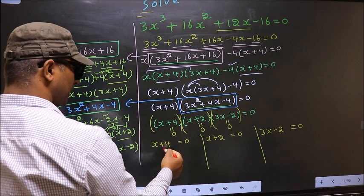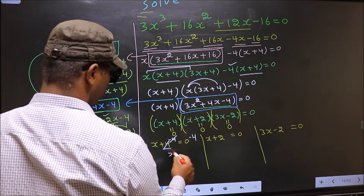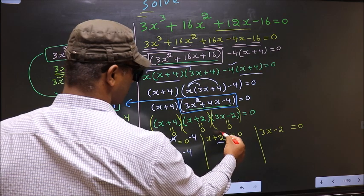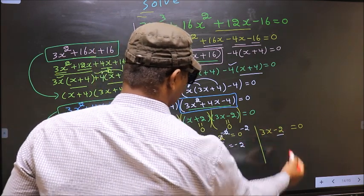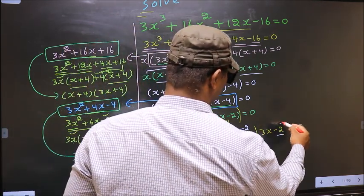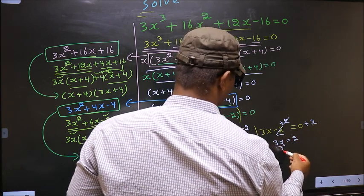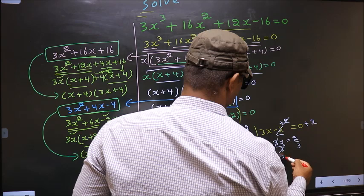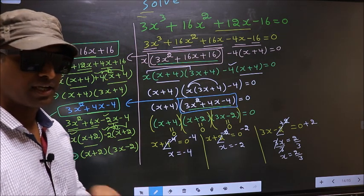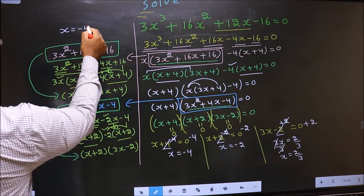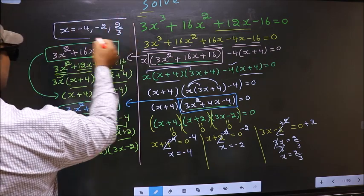To get x from x plus 4 equal to 0, subtract 4 — you get x equal to minus 4. Here remove plus 2 by subtracting 2 — you get x equal to minus 2. Now for 3x minus 2 equal to 0, add 2 to get 3x equal to 2, then divide by 3 — you get x equal to 2 by 3. So the x values are minus 4, minus 2, and 2/3. This is our answer.